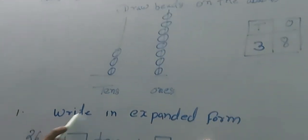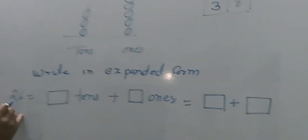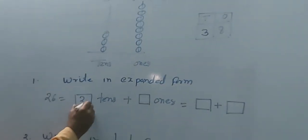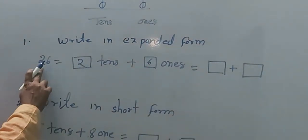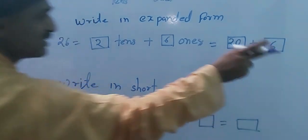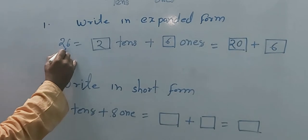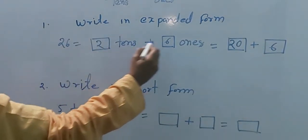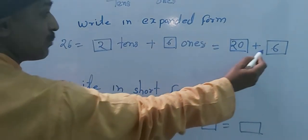Write in expanded form of 26. One tens means 2 tens, 6 ones. 2 tens means 20 plus 6, equals 26. Understand? 26 means 2 tens and 6 ones. 2 tens means 20 plus 6, equals 26.